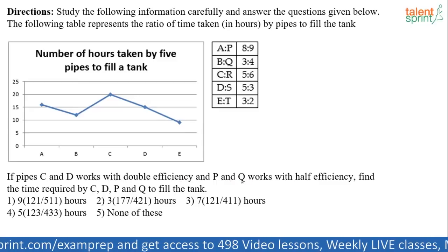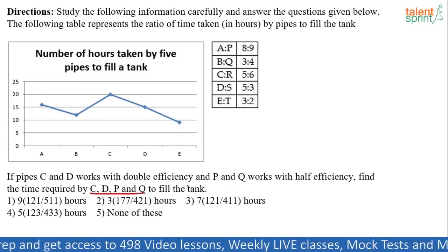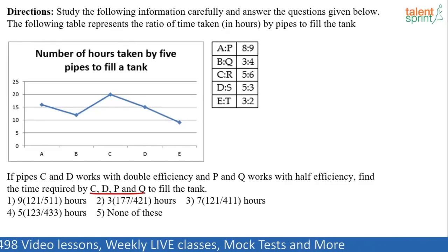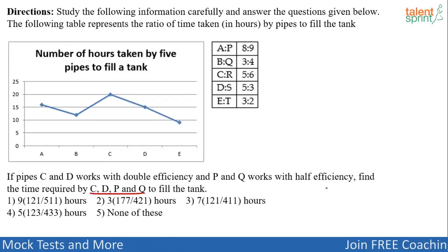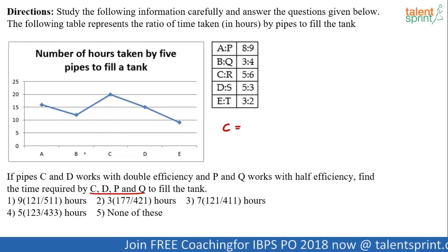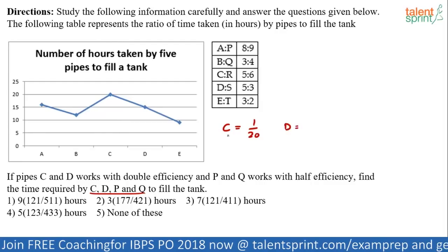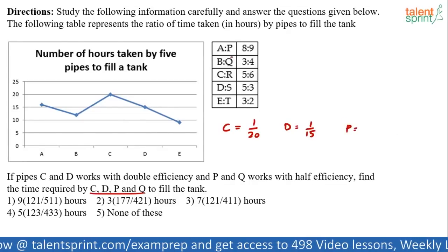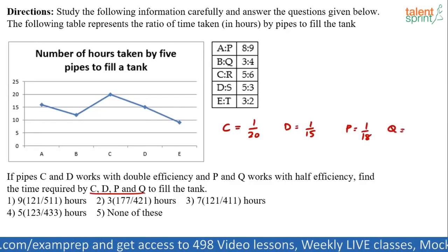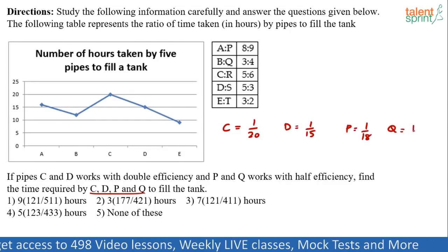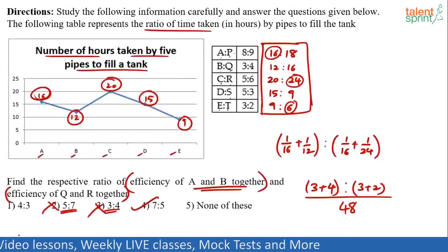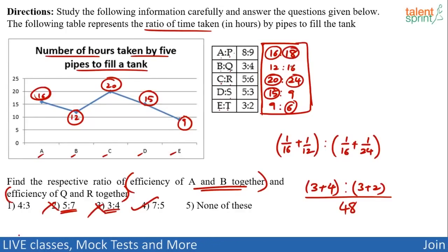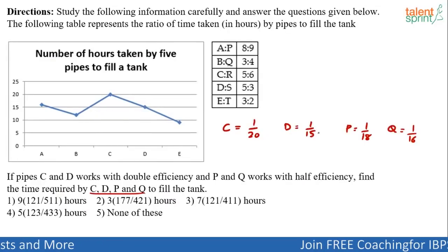Next question. If pipe C and D works with double efficiency and pipes P and Q works with half efficiency, find time required by C, D, P, Q to fill the tank. Again, a simple one. Should not take more than 30-40 seconds. Your clock is ticking now. Alright, let's take it up. So, it says pipes C and D works with double efficiency and pipes P and Q works with half efficiency. Find the time required by C, D, P, Q. See, what is the efficiency of C? C's efficiency is equal to, how much time does C take? 20. So, efficiency will be 1 by 20. What is the efficiency of D? D takes what? 15 hours. So, efficiency is 1 by 15. What is the efficiency of P and Q? P's efficiency is what? I think it was 18. So, 1 by 18. And Q's efficiency is what? It was 1 by 16.